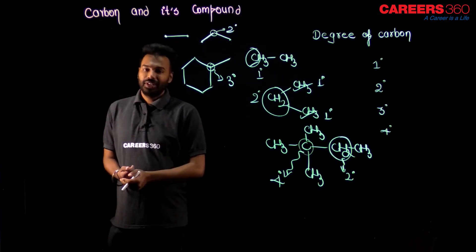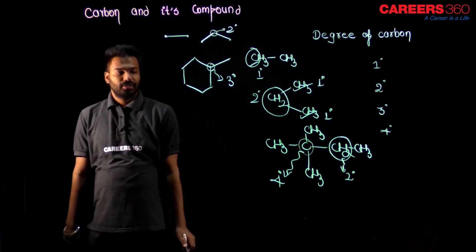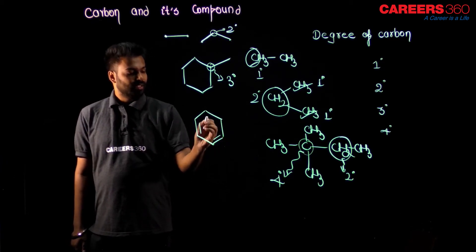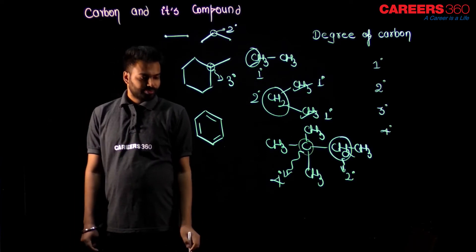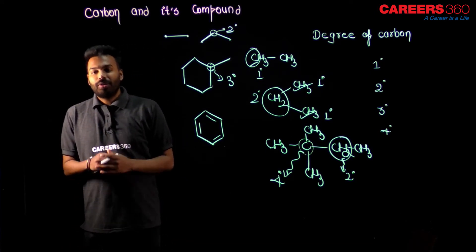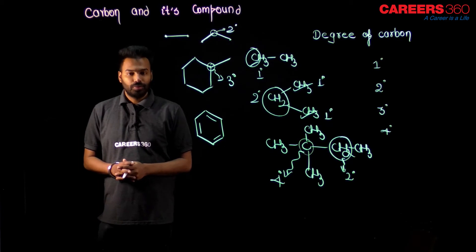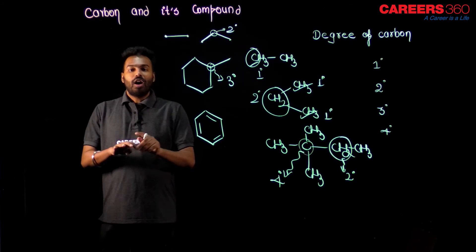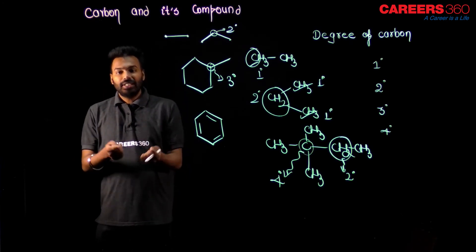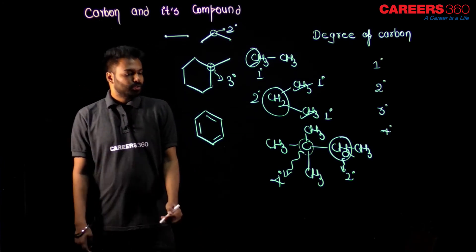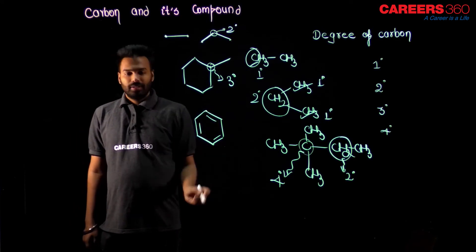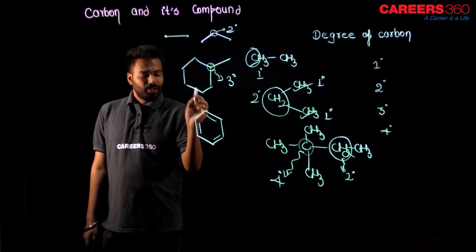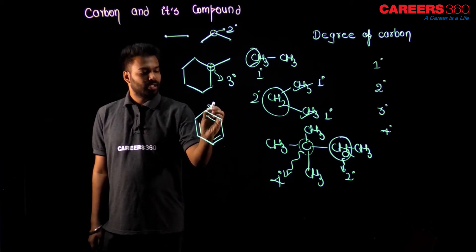This is how we find out the degree of carbon. Let us take the example of the benzene molecule. Double bond or triple bond will not affect the degree of carbon — not at all. The degree of carbon only represents how many carbon atoms are directly touching that carbon. In benzene, each carbon has one carbon connectivity on one side and one carbon connectivity on the other, giving two degree. So all carbon atoms in the benzene ring are two degree, or secondary carbon atoms.